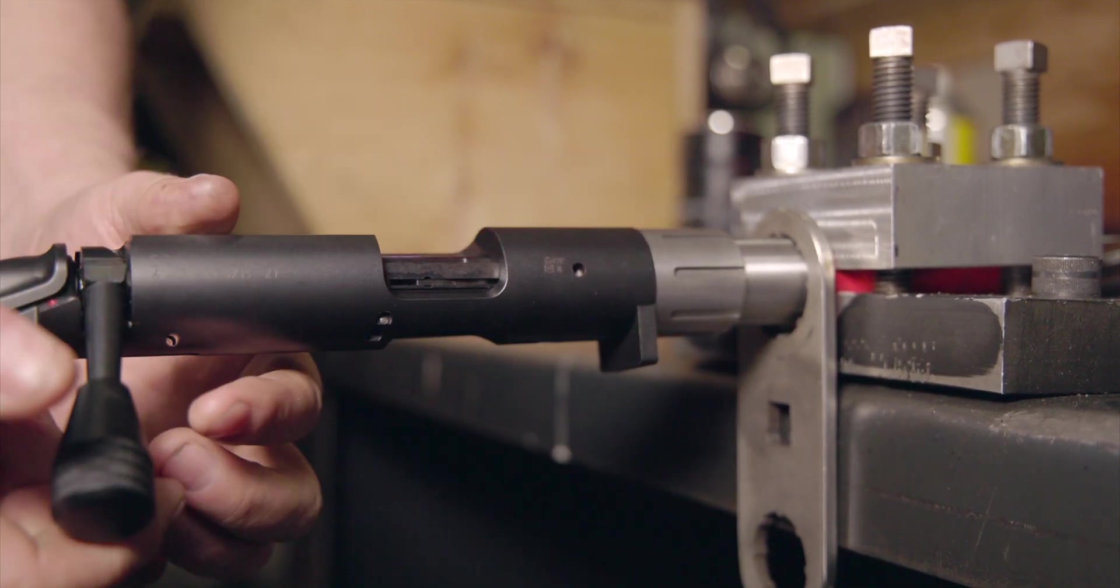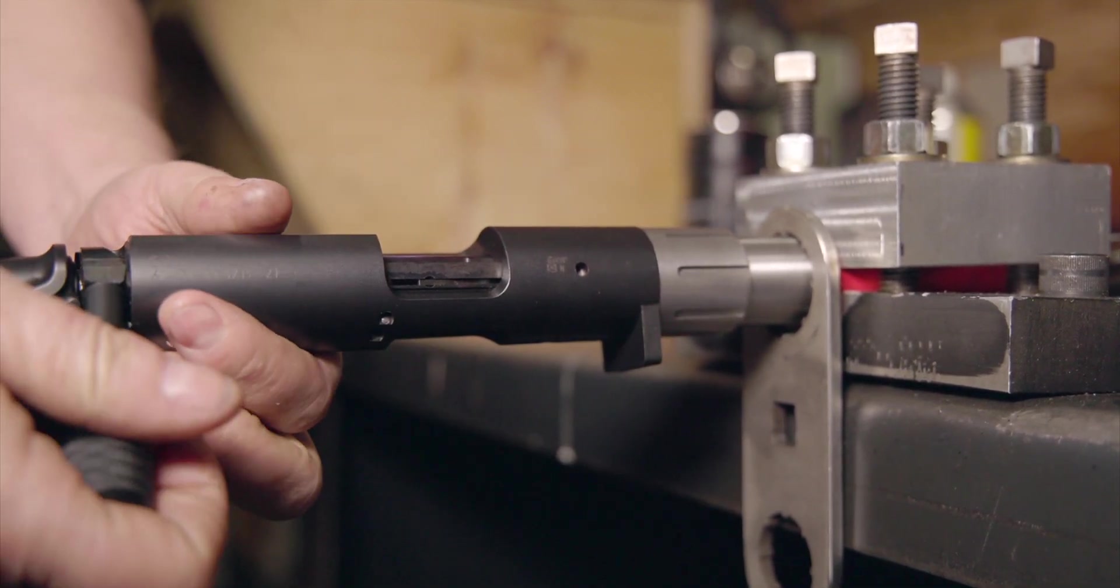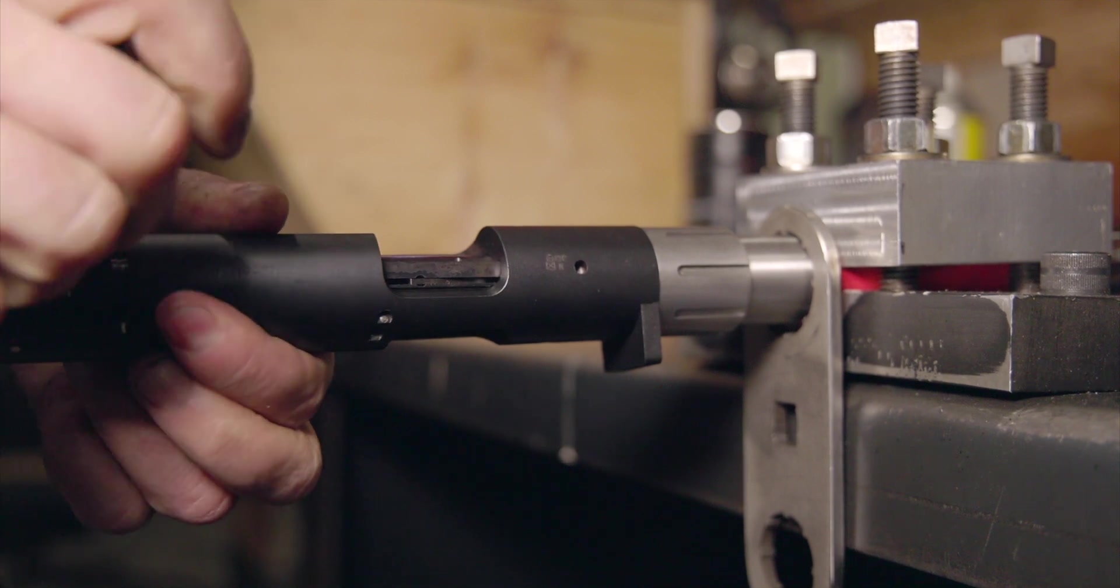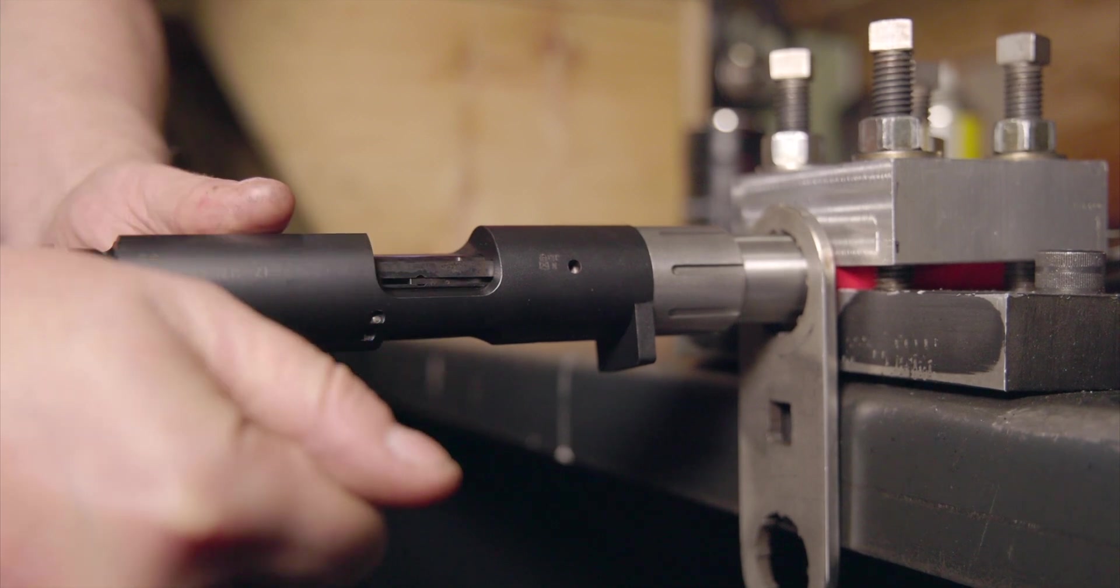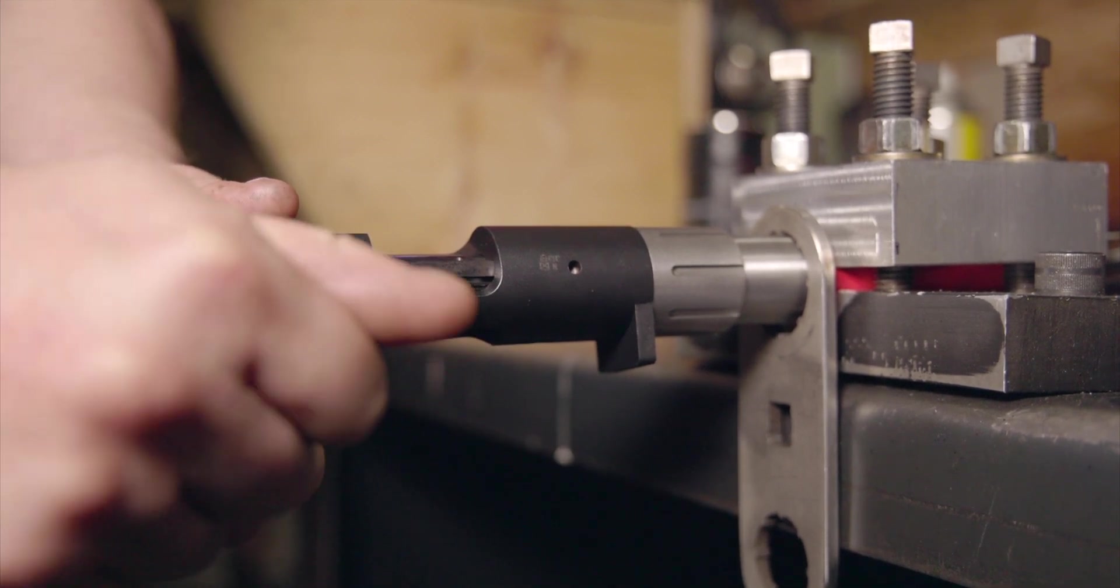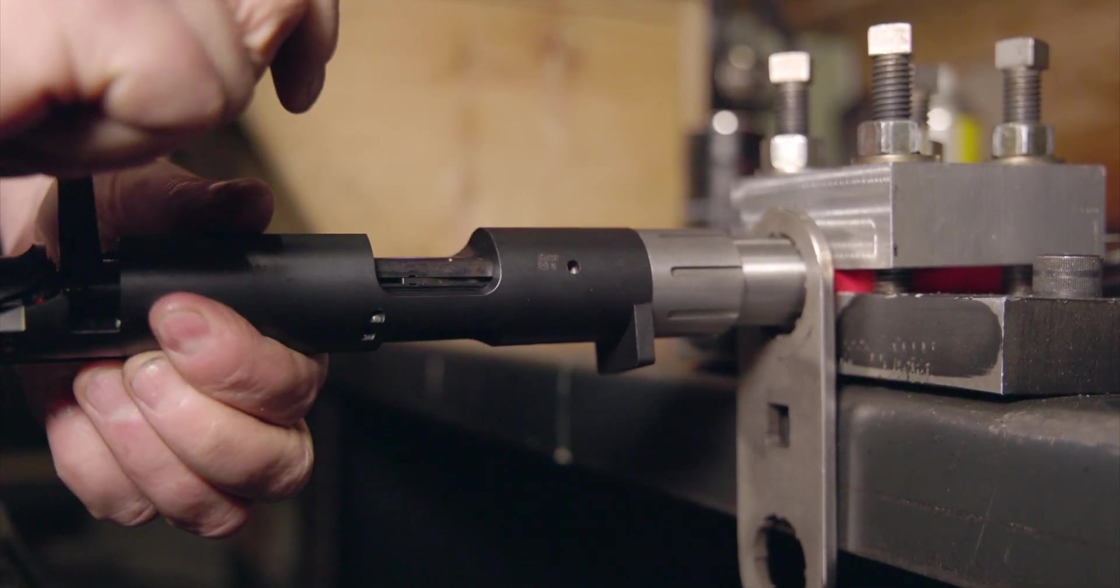Once you get it nice and tight on there, you're going to tighten up the barrel nut by hand and open the bolt. Don't eject the go gauge, but what you're going to look for is just a little bit of pressure on the downstroke on the bolt.